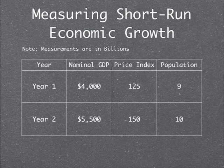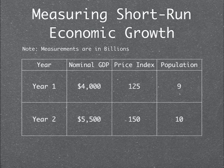Measuring short-run economic growth — note, measurements are in billions. For year 1, the nominal GDP is 4,000, the price index is 125, and the population is 9. For year 2, the nominal GDP is 5,500, the price index is 150, and the population is 10.